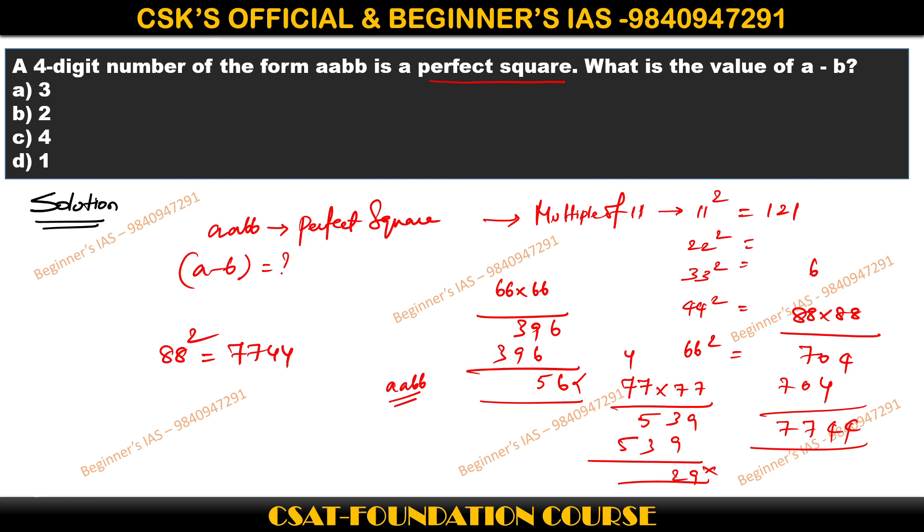But the question is dealing with a minus b. In such a scenario, a is equal to 7, b is equal to 4, then a minus b is equal to 3. Therefore, the answer for this question is option a, which is 3.